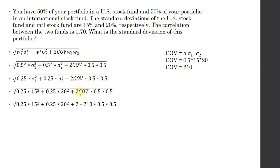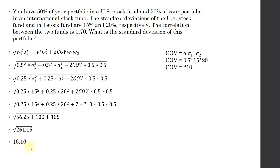Substituting the covariance, the formula should look like this. Reducing further, we get the variance, and then in the final step, we take the square root of that to get our standard deviation. We first converted the standard deviations to variances by squaring them, and then we take the square root to convert back to standard deviation.